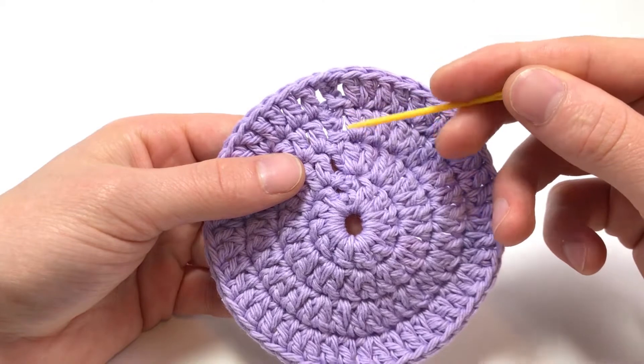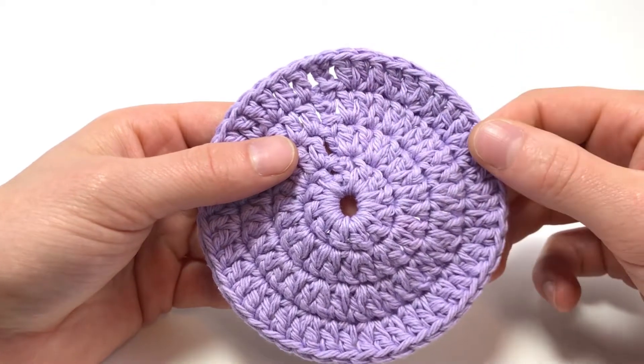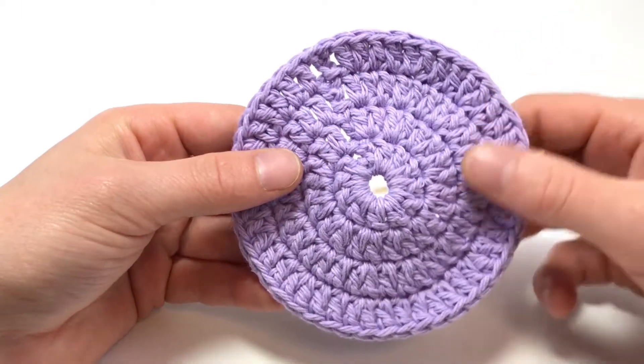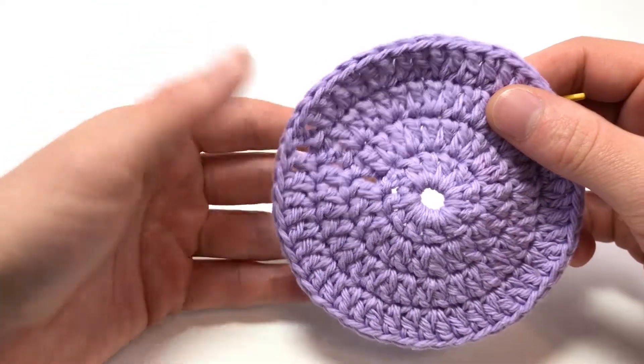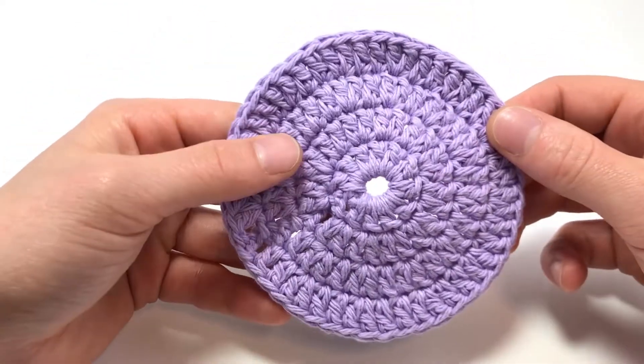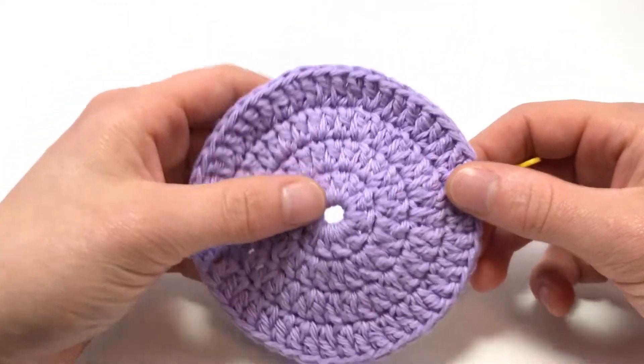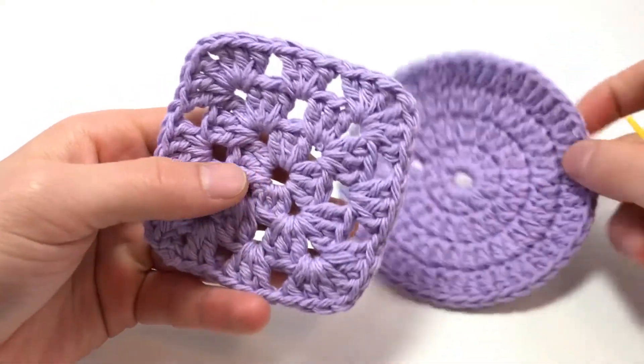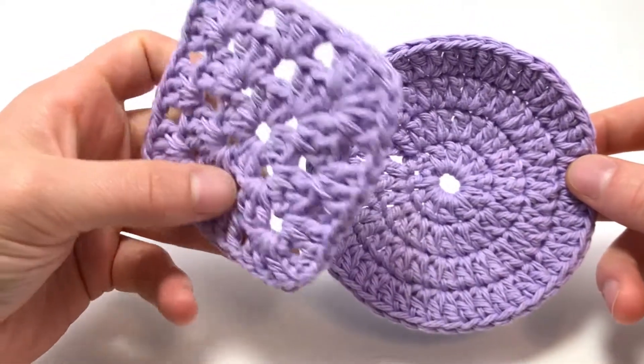The one major con to this technique is that it leaves a pretty visible seam along where you're joining, which is why I usually just work in the round rather than join in the round when I'm making beanies or amigurumi. It is a great technique though and used a lot in motifs and things like granny squares.